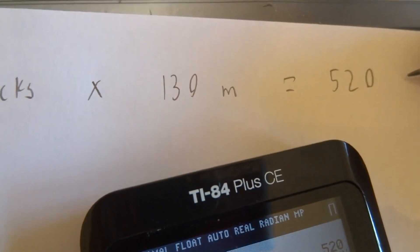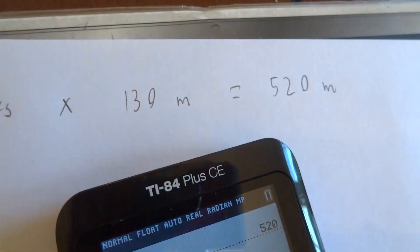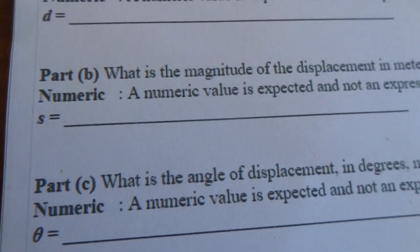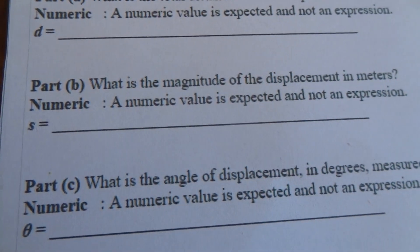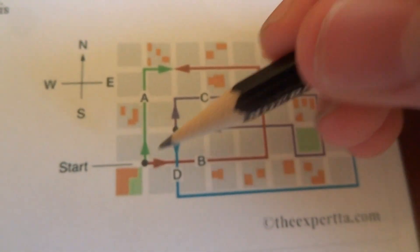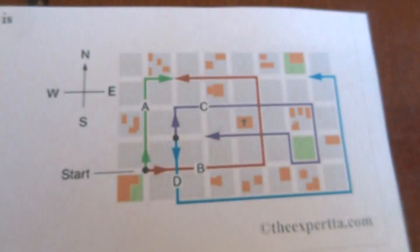For part B, it asks what is the magnitude of the displacement in meters. So that's essentially asking what is the distance from your starting point to your end point.